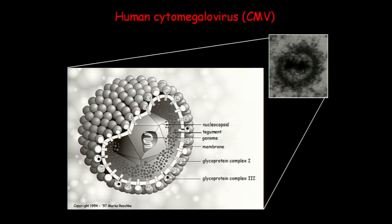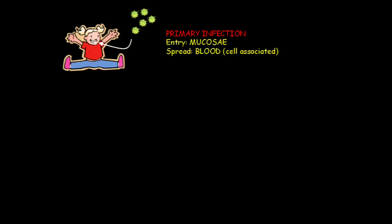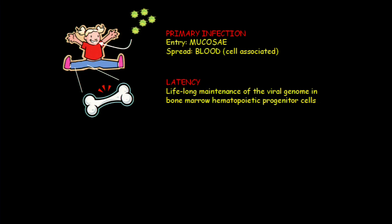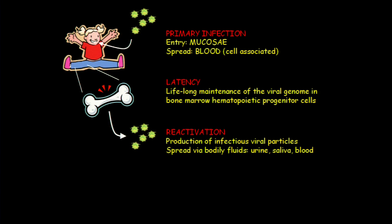The virus is usually acquired in early childhood. The entry route is told to be the mucosae, and systemic spread occurs through blood — it's strictly cell-associated, so you don't have free virus released into the blood. Like all viruses, CMV becomes latent. The major site of latency for CMV is the bone marrow, in particular hematopoietic progenitor cells. From there it can reactivate, producing new infectious viral particles which can then be spread through body fluids like urine, saliva, and blood.